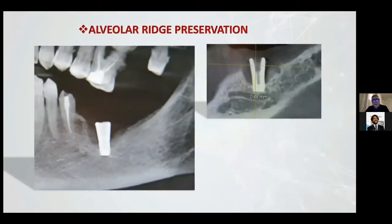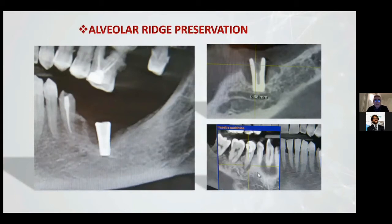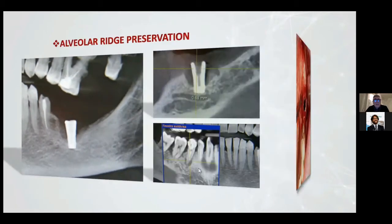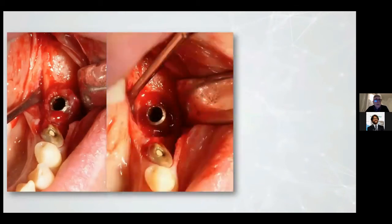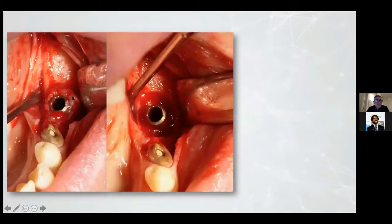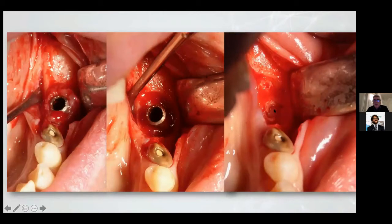This is another alveolar ridge preservation case. We had an implant failure. We lost a lot of material around this implant, and this implant is very near to the alveolar nerve and alveolar canal. We removed the soft tissue, removed the implant, and found a communication with the alveolar canal.